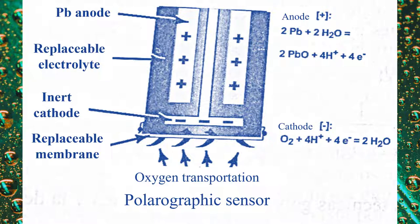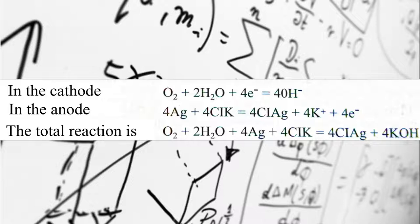The chemical reactions that take place are the ones you can see on the screen. Since for each oxygen molecule that is reduced, four electrons enter the cell and four leave the anode, an electrical current is obtained from cathode to anode that is directly proportional to the amount of oxygen that passed through the membrane.